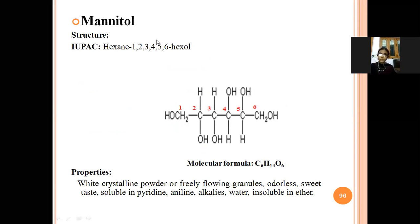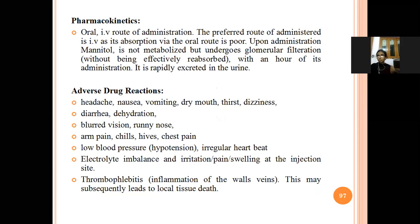The first drug in osmotic diuretics is mannitol. Its IUPAC name is hexane-1,2,3,4,5,6-hexol. There are six carbon atoms and six hydroxyl groups — one on each carbon — hence named hexane-1,2,3,4,5,6-hexol. Properties: white crystalline powder, odorless with a sweet taste, soluble in pyridine, aniline, alkaline water, and insoluble in ether.